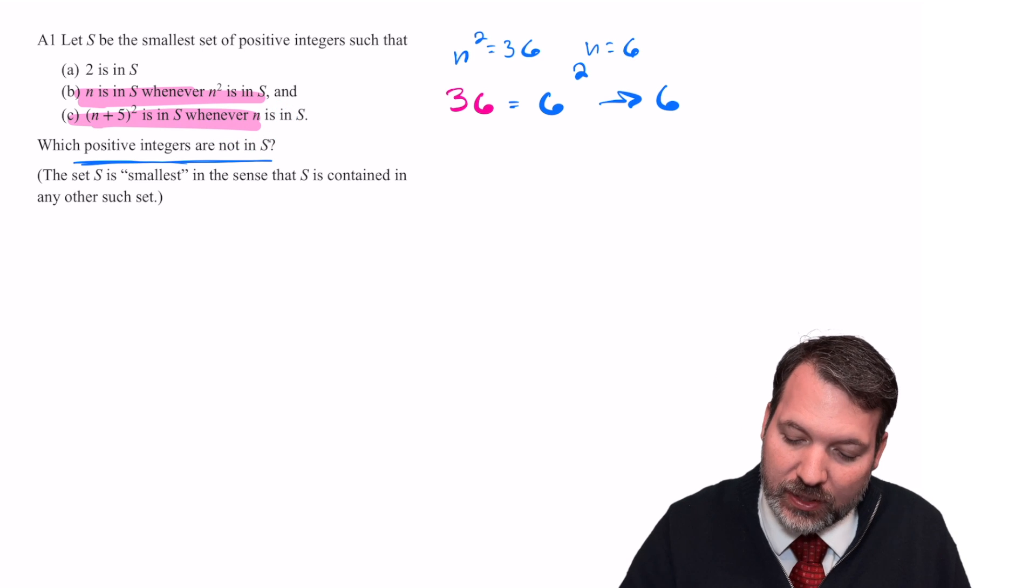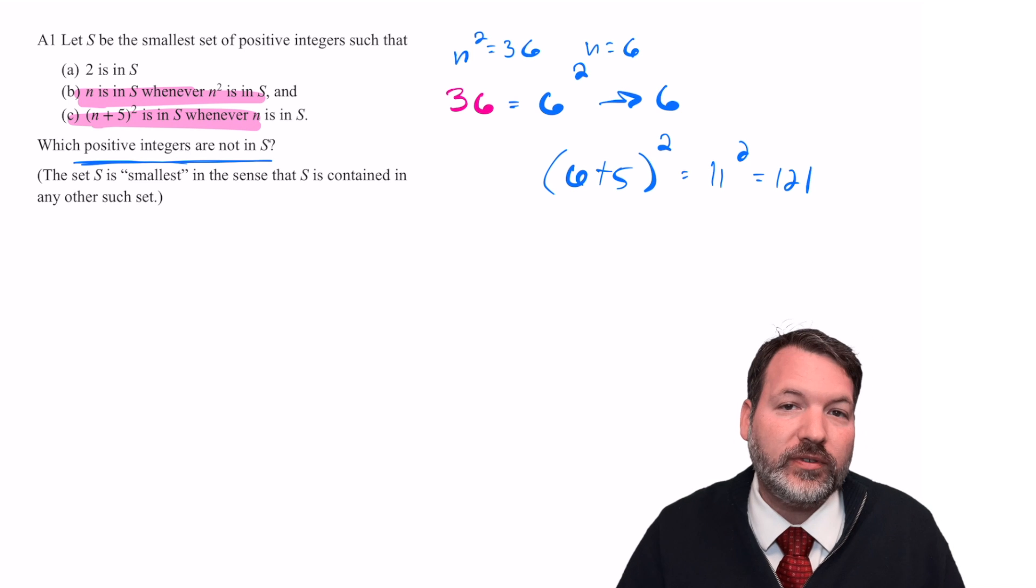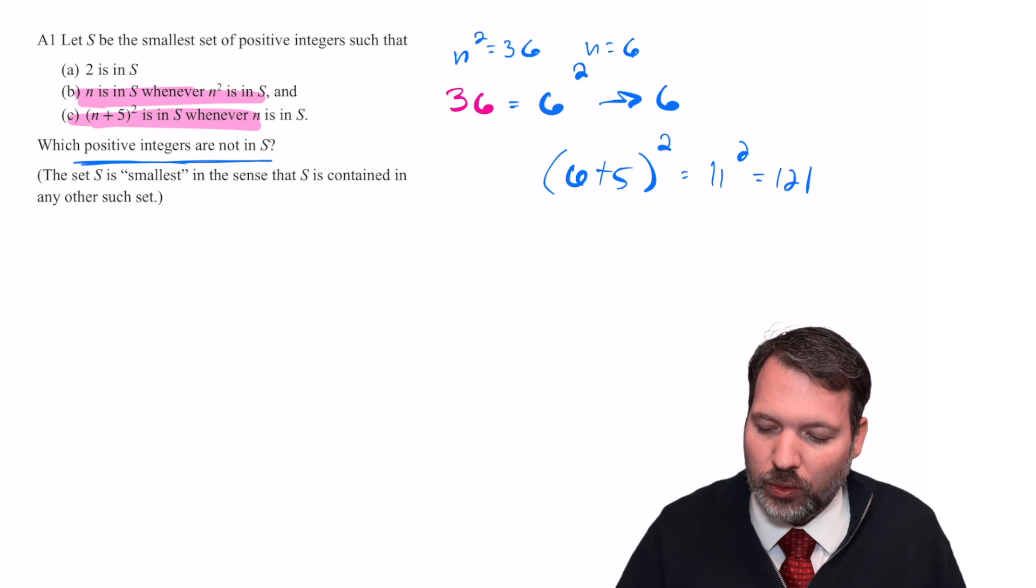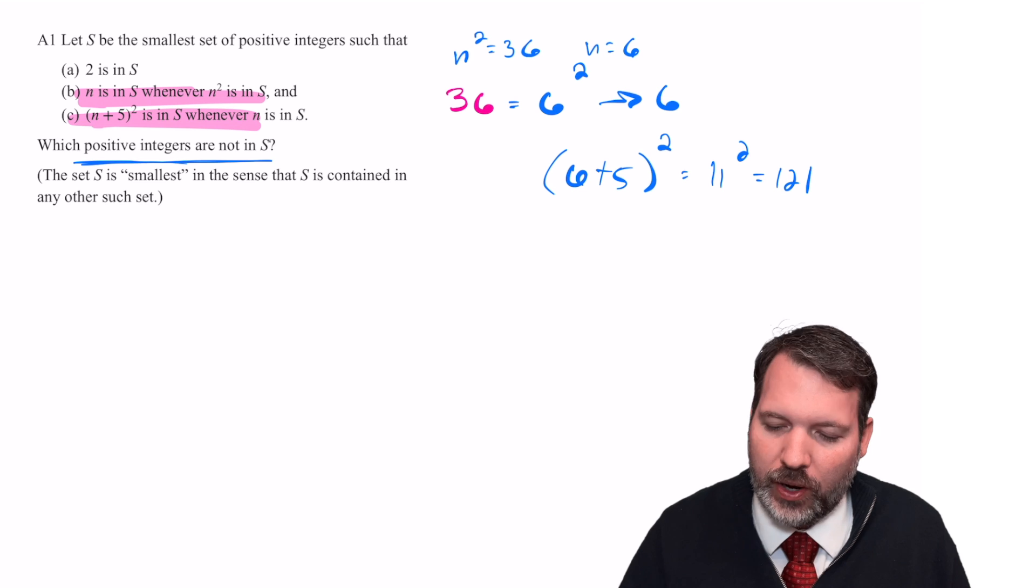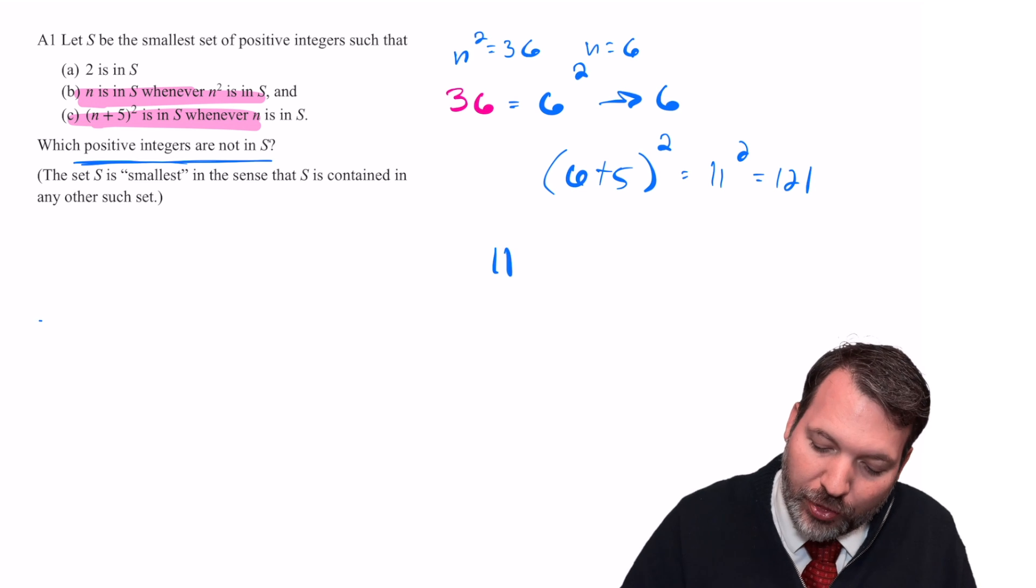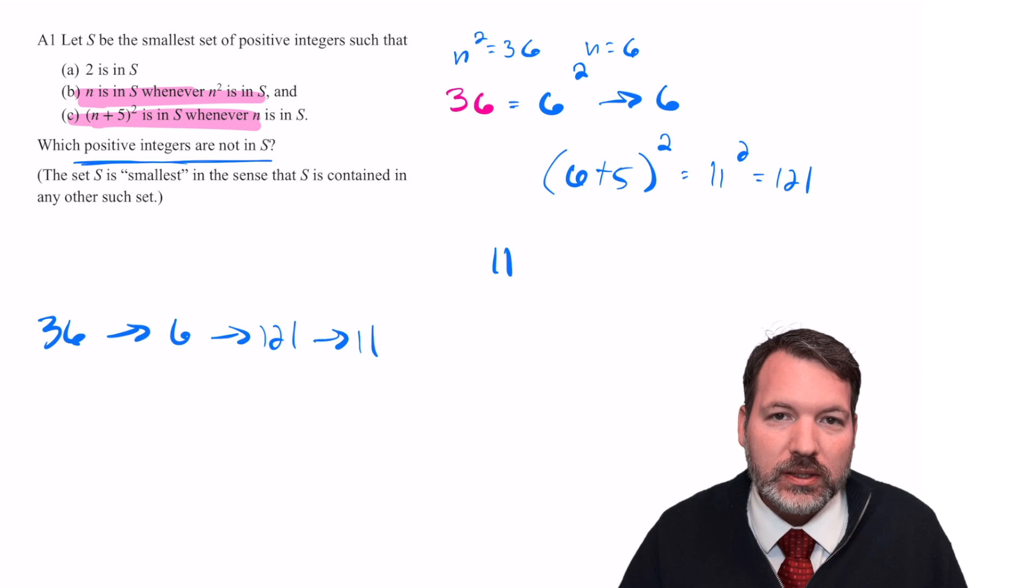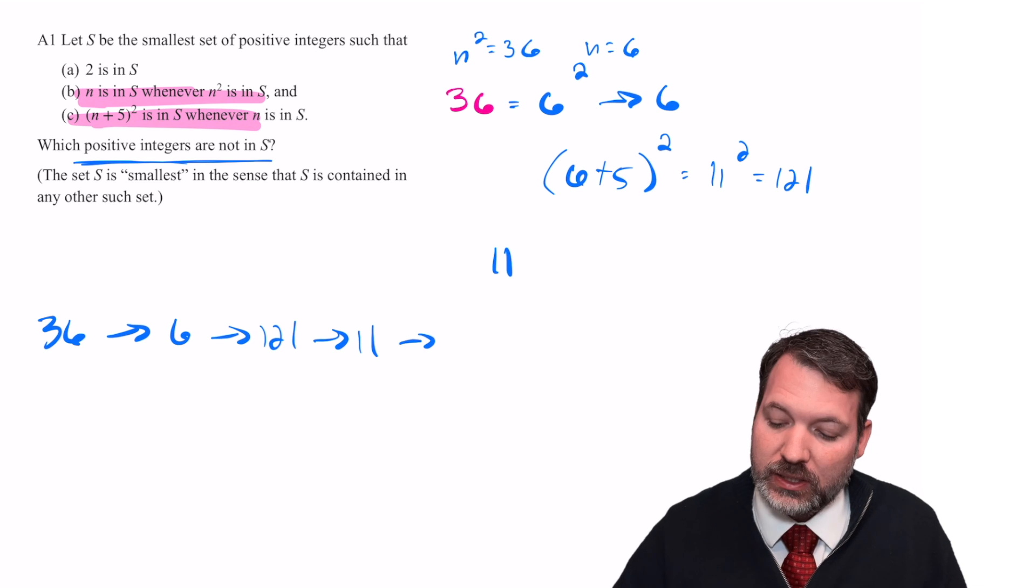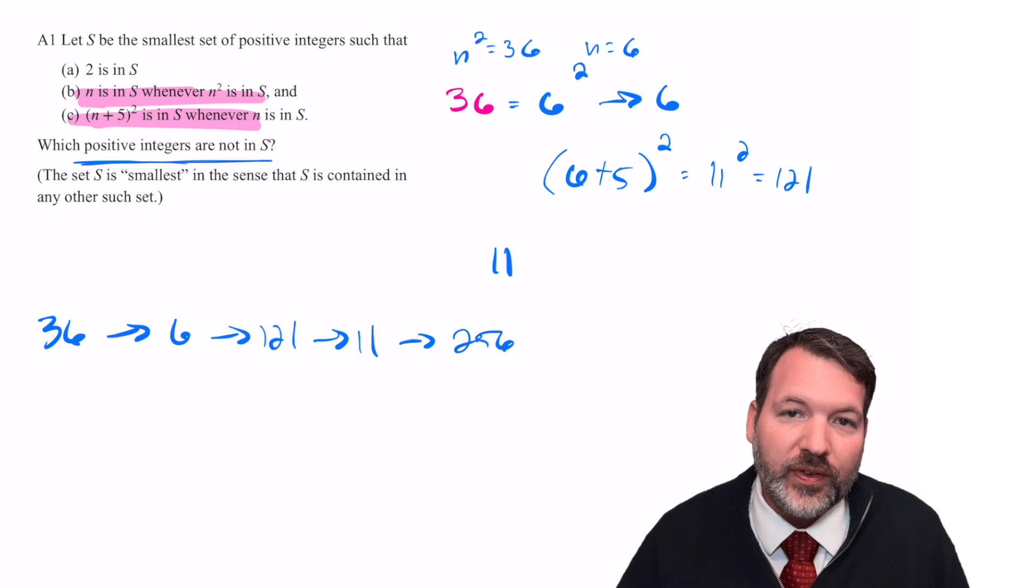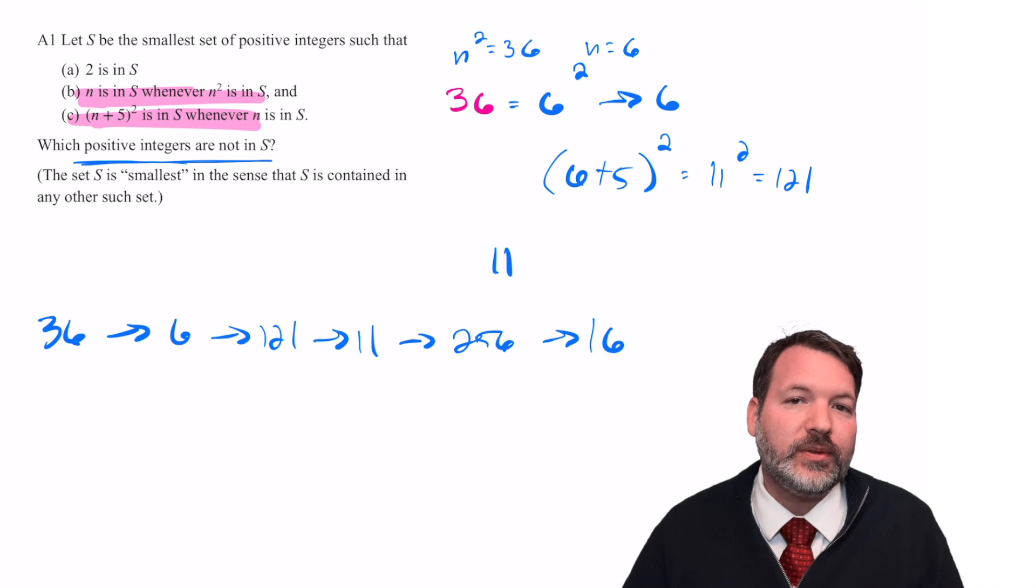But then we know that if N is in the set, or whenever N is in the set, N plus 5 squared is also in the set. So 11 squared equals 121 would have to be in the set. From there though, you can tell, well wait, 121 obviously is a perfect square because it's coming from 11 squared, so that must mean that our set also contains 11.